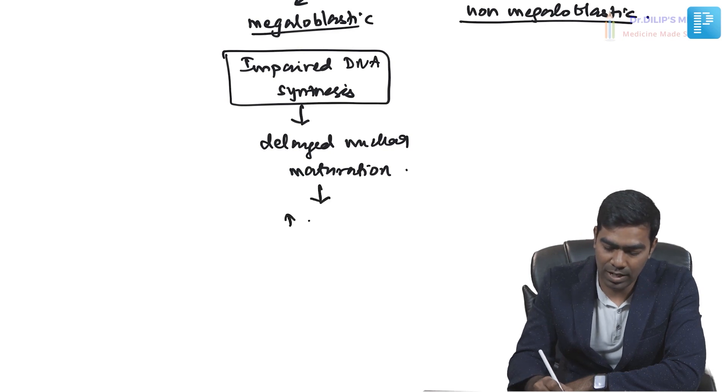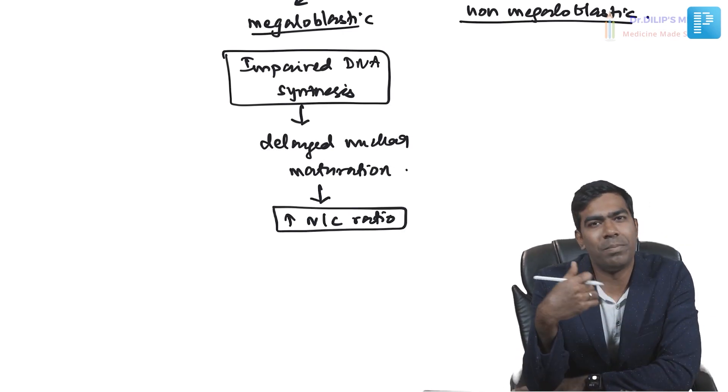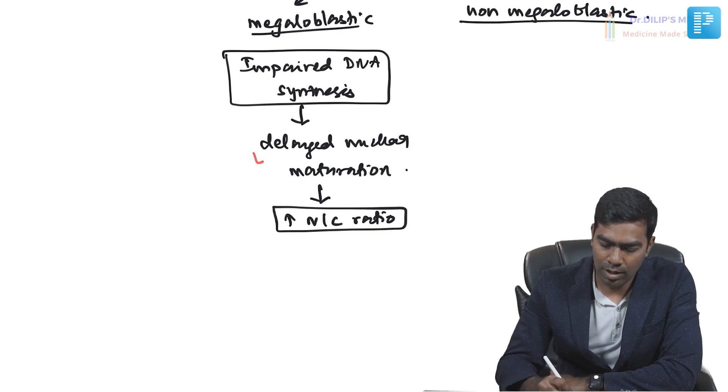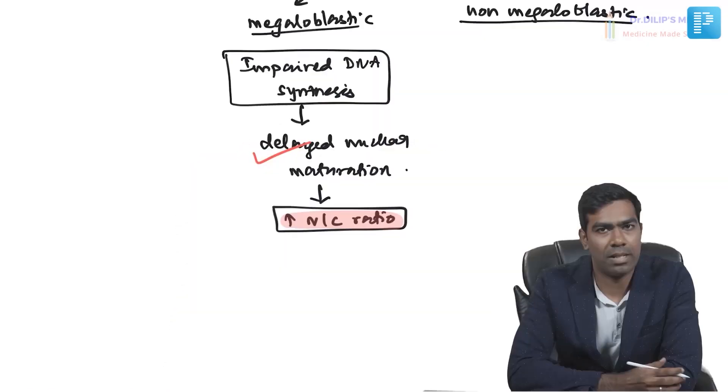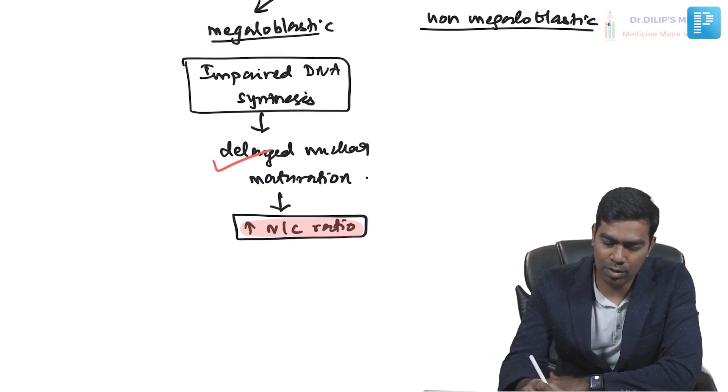Because of the delayed nuclear maturation, you will have a very high nuclear-to-cytoplasmic (N:C) ratio — the nucleus will remain persistently bigger. In many lineages, especially erythrocyte and WBC lineages, the nucleus becomes progressively smaller. In erythroids it is completely expelled, and in myeloid it becomes smaller over time. But here, because of delayed maturation and poor DNA synthesis, the nucleus will not become smaller, so the N:C ratio is increased.